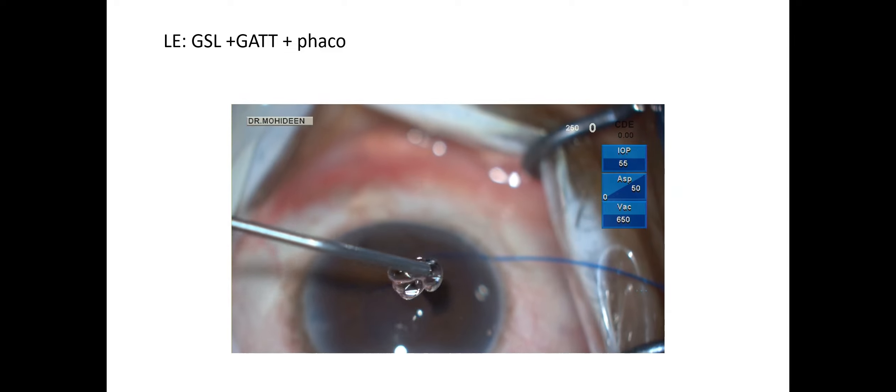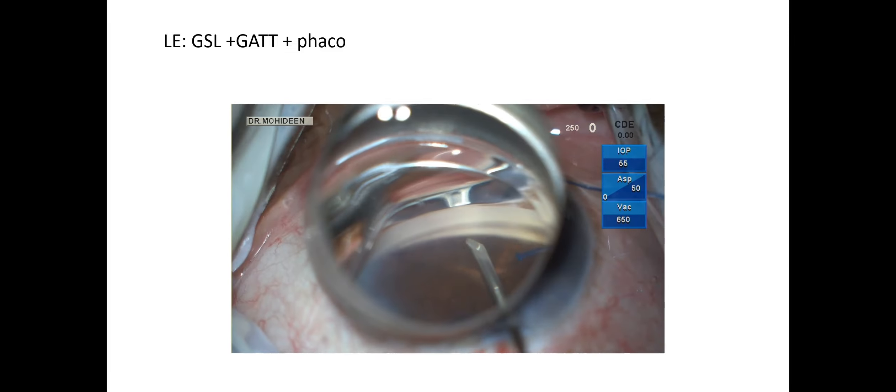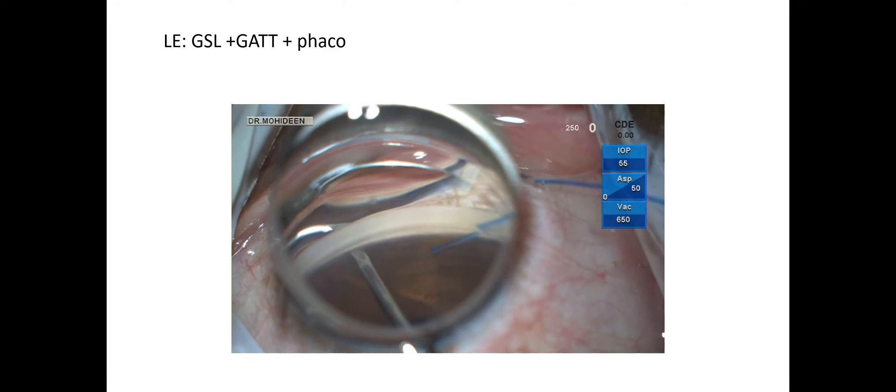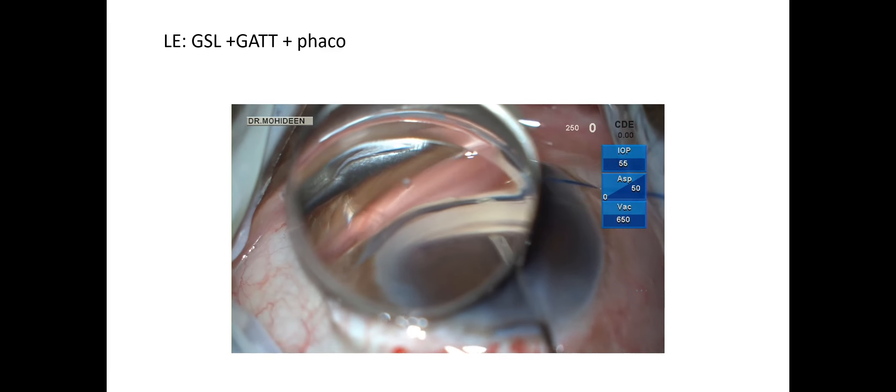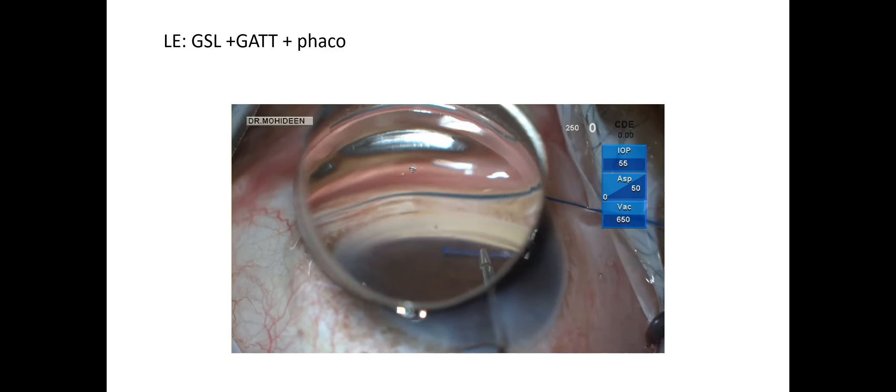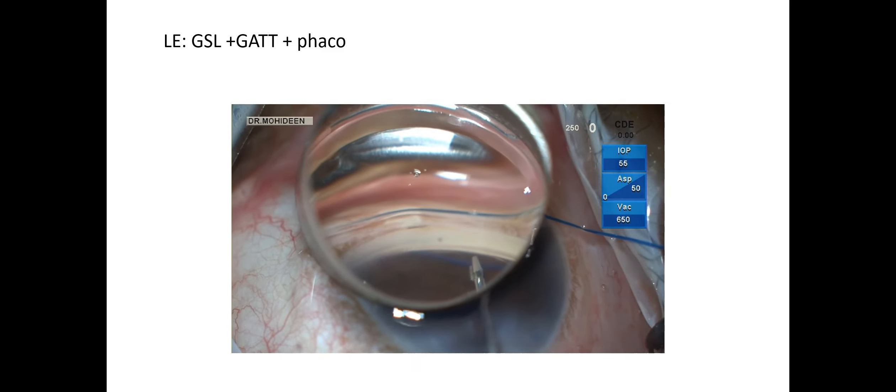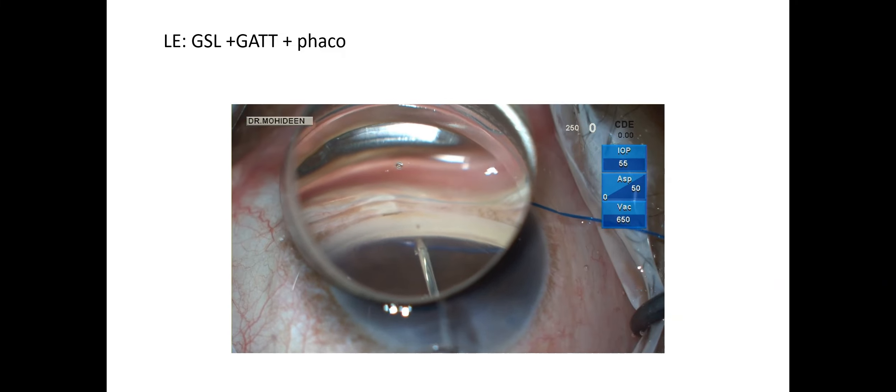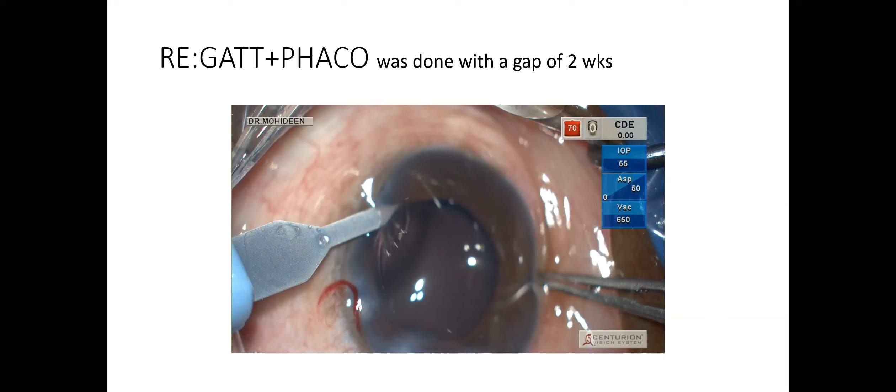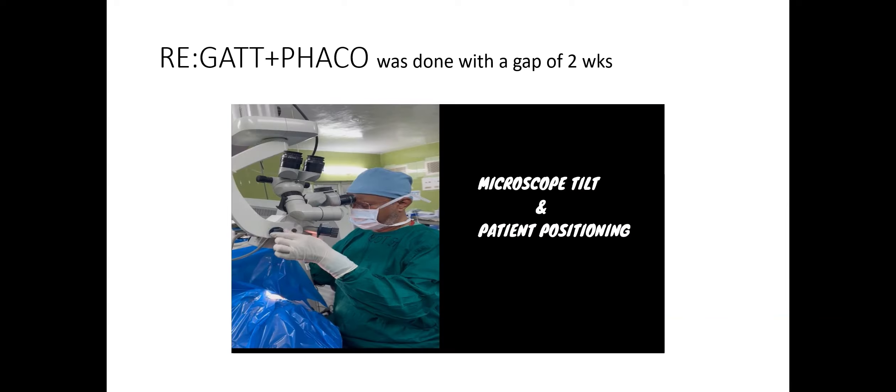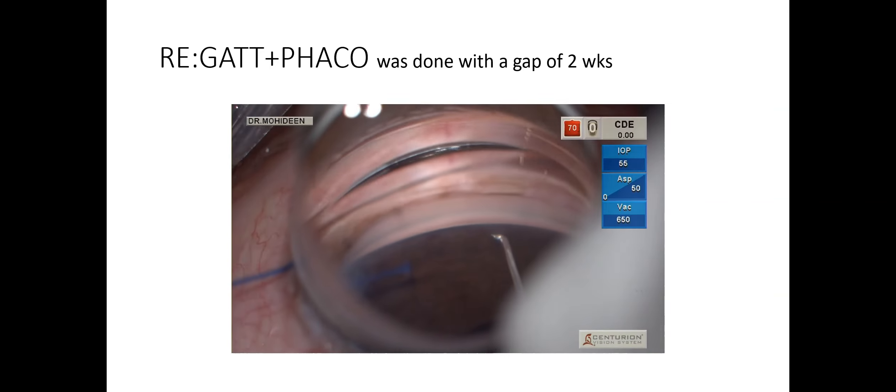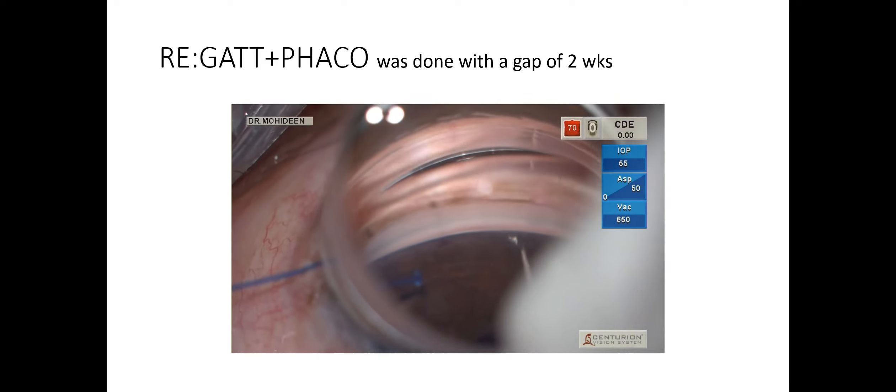The Tanito microhook is introduced through the paracentesis and gentle goniosynechiolysis is performed. After achieving goniosynechiolysis, the blunted prolene tip is introduced and goniotomy is done. Schlemm's canal is exposed in the nasal quadrant and the prolene suture is threaded and the procedure is performed. The same patient underwent GATT with phacoemulsification within a gap of two weeks. The microscope tilt and patient positioning are key factors for successful GATT.